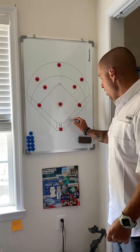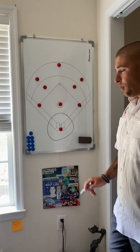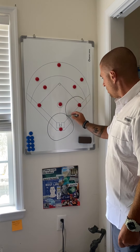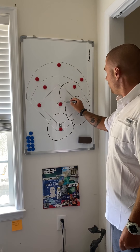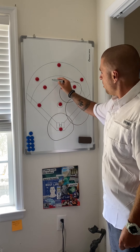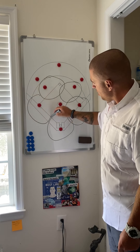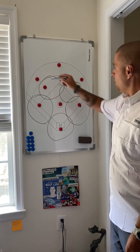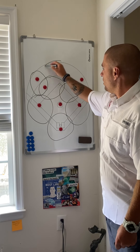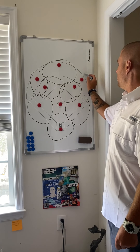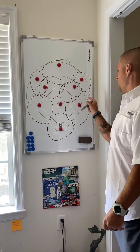Our catcher — ball goes in the air — has about that territory. Our first baseman has about that territory. Our second baseman, right there. Our shortstop, right there. Third baseman right there. Left fielder, he can get some balls in. Center fielder has the biggest coverage. And then right fielder. Nobody's catching balls down in the corner.